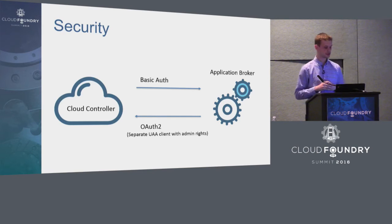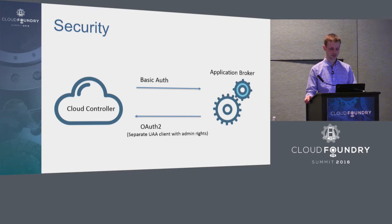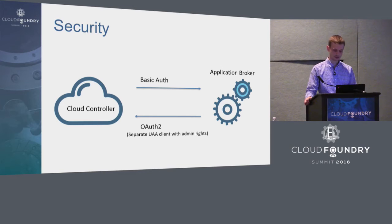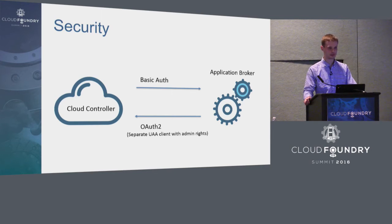As Application Broker is part of a larger solution called the Trusted Analytics Platform, we are also thinking about security. Communication going to Application Broker is secured by basic authentication, as proposed by Cloud Foundry documentation. In the opposite direction, communication is protected by OAuth 2. We introduce a separate UAA client with high privileges, because we must discover, clone, and delete applications within all organizations and spaces in the Cloud Foundry installation, so admin rights are crucial.